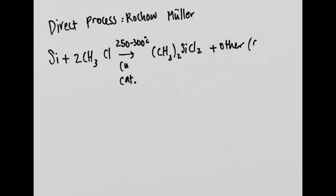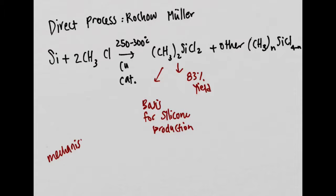Major product of this process is dimethyl dichlorosilane with 83% yield and is used as basis for production of silicone. The mechanism of this process is yet to be found, and at this point we are only certain of the importance of the copper catalyst.